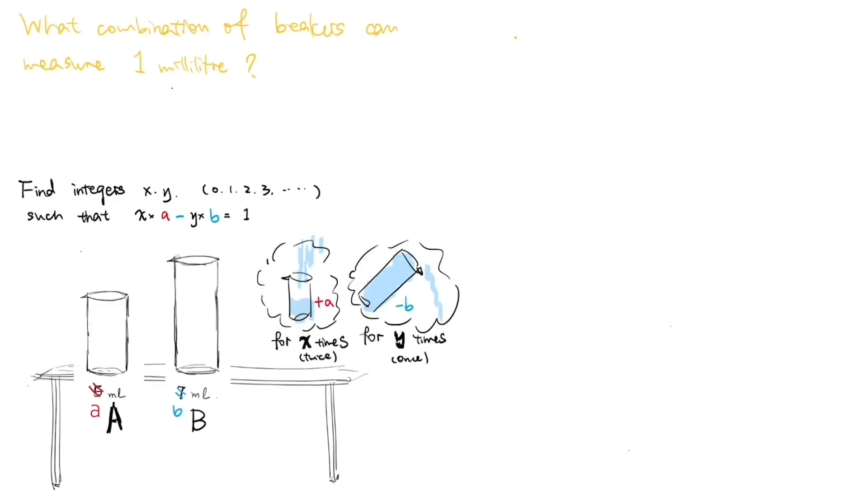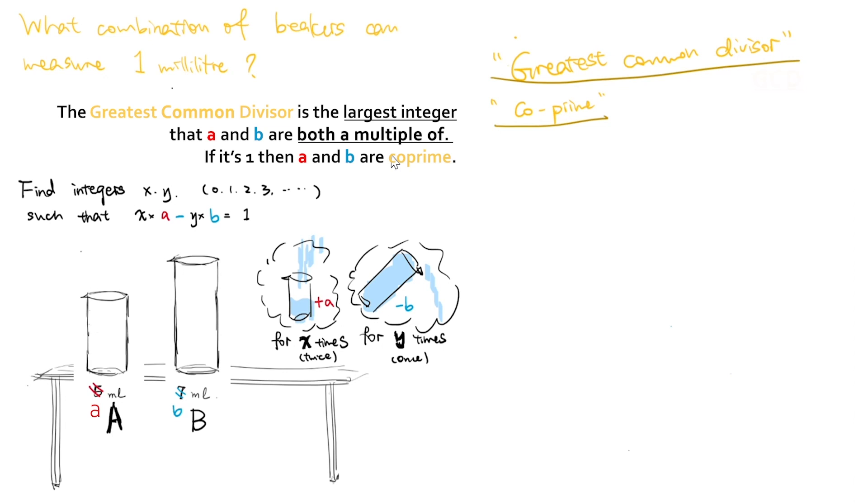So what combinations of beakers allow us to measure 1 milliliter and when not? To address this question, let me introduce two concepts, greatest common divisor, abbreviated as GCD, and co-prime, and also a lemma called Bézout's Lemma. For two positive integers A and B, the greatest common divisor is the largest positive integer C, that A and B are both a multiple of. We denote the greatest common divisor of A and B as GCD of A and B bracket. If GCD of AB is equal to 1, we say A and B are co-prime, otherwise we say they're not co-prime.